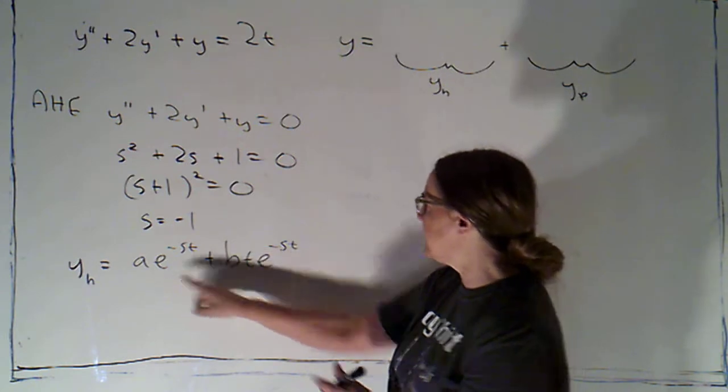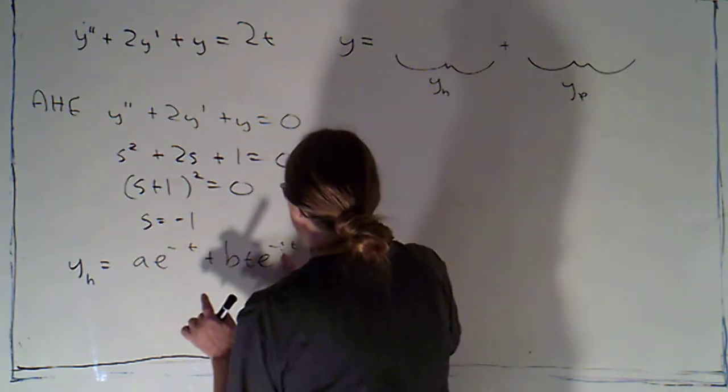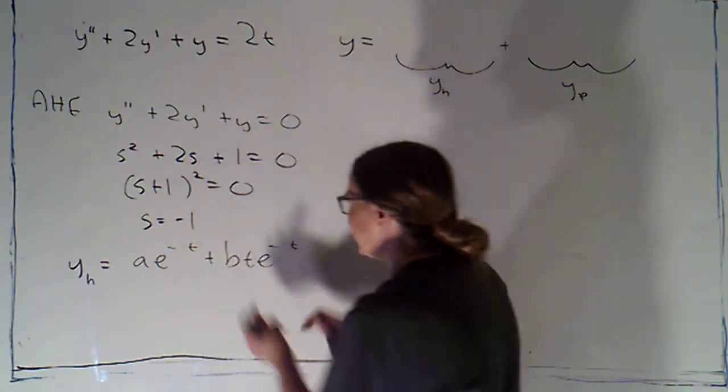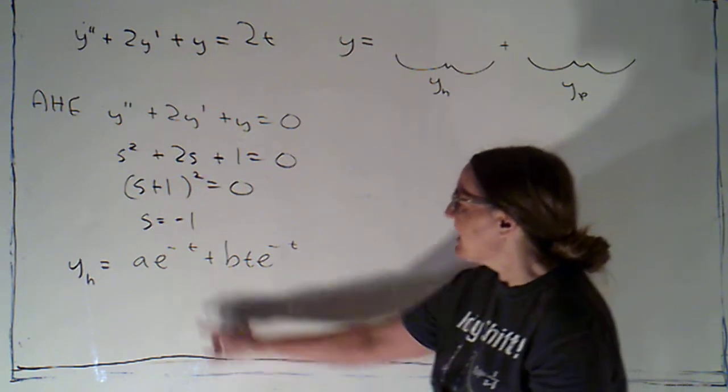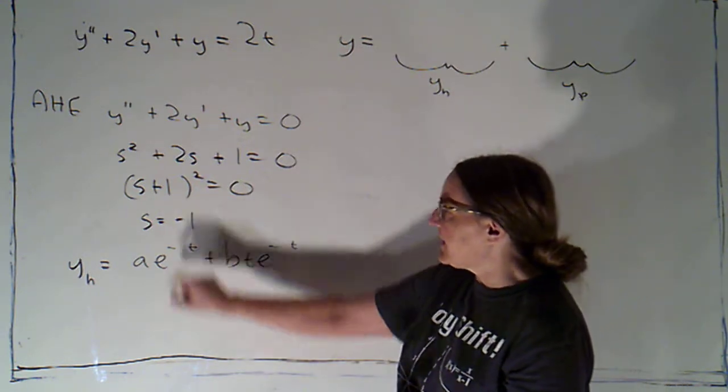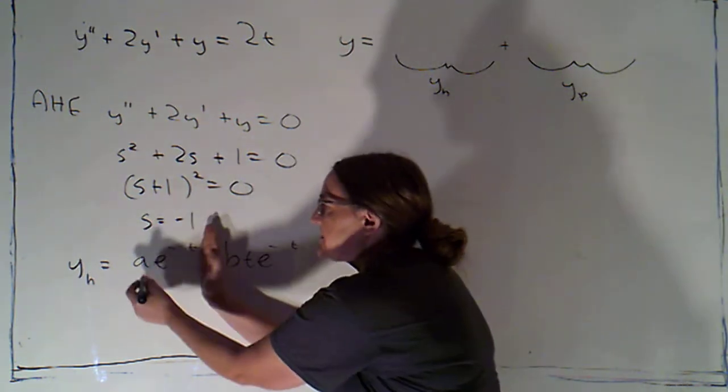I know any multiple of e—I'm sorry, I should have plugged in what s was. So just negative t, because s was negative 1. If that's a root of the characteristic equation, that's going to be a solution.